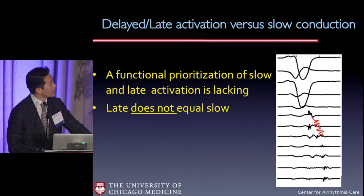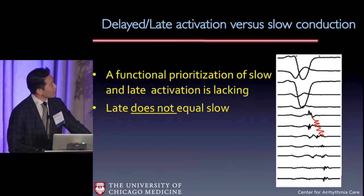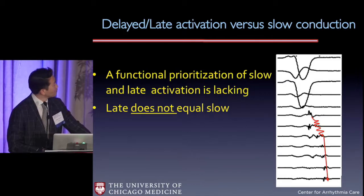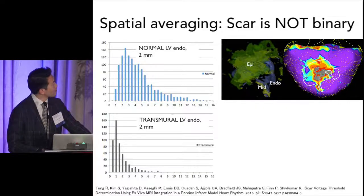Here's an example with a multi-electrode catheter where the greatest slowing is between points one, two, and three. As you get into an area that's activated late, its conduction velocity is actually not as slow. So again, late does not equal slow.